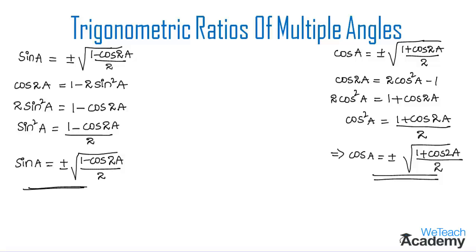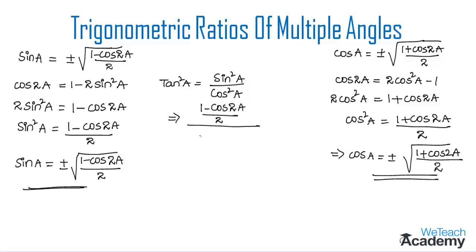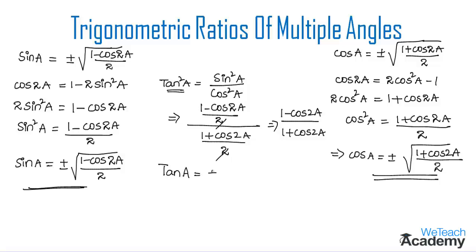Now let us derive the formula for trigonometric ratio tan a. Let us consider tan square a which is equal to sin square a divided by cos square a. Now, let us write the value of sin square a and cos square a here. By writing, we get 1 minus cos 2a by 2, which is the value of sin square a, whole divided by the value of cos square a which is 1 plus cos 2a by 2. Here, the 2s get cancelled and we get 1 minus cos 2a divided by 1 plus cos 2a. So this is the value for tan square a. That implies we can write tan a is equal to plus or minus under root 1 minus cos 2a divided by 1 plus cos 2a. This is the formula for tan a.